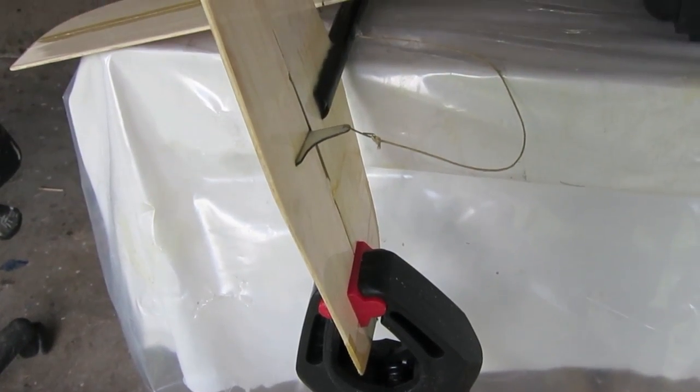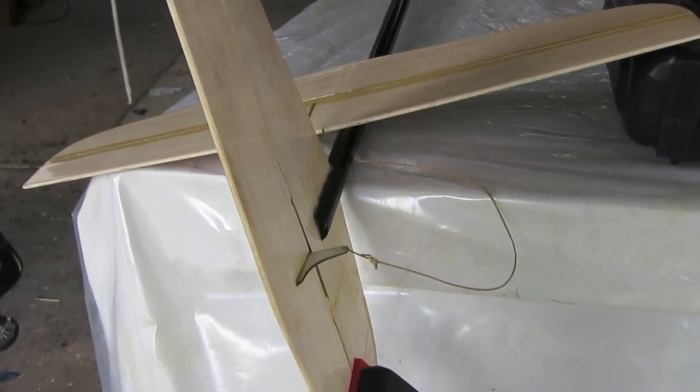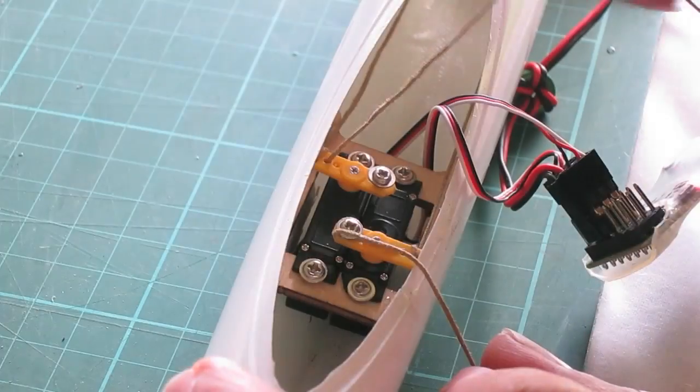Now I'm going to tension the line and I've clamped the rudder straight and it'll pull the line through to the servo.